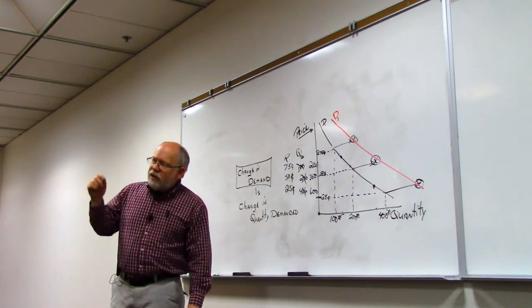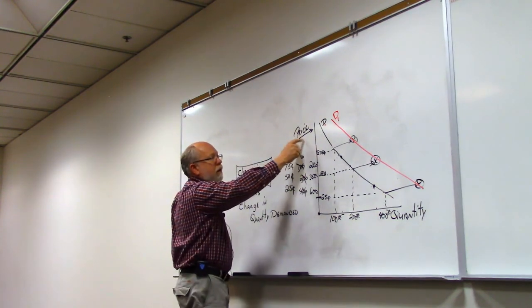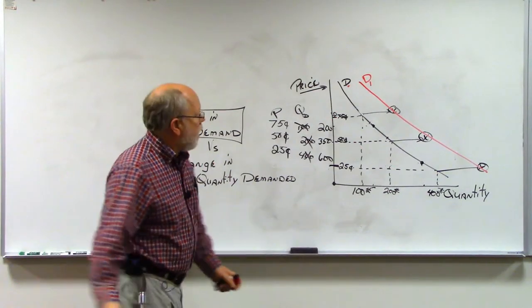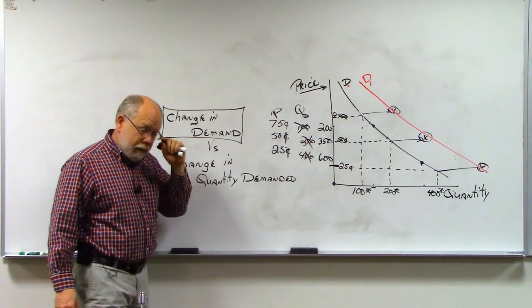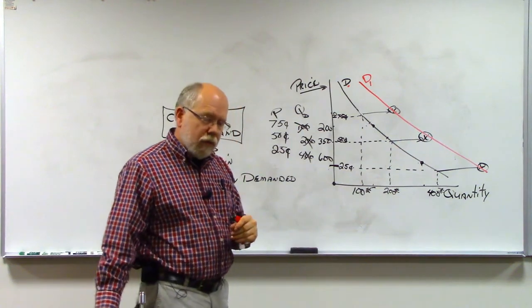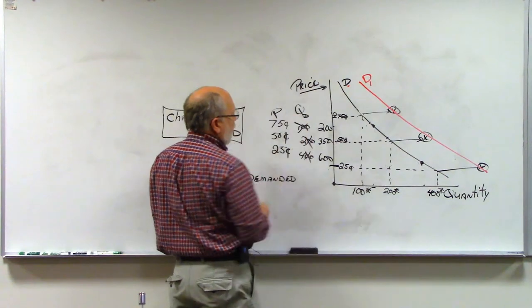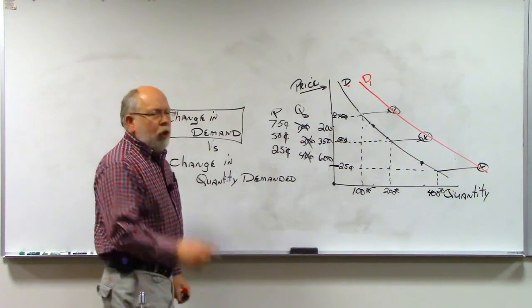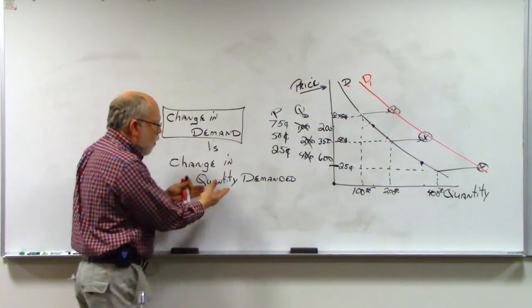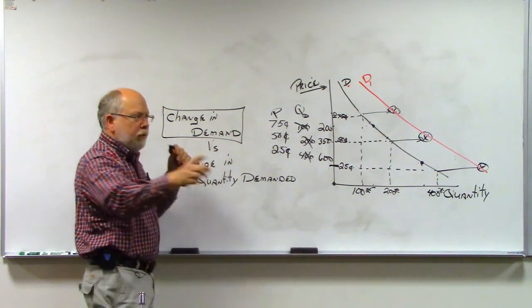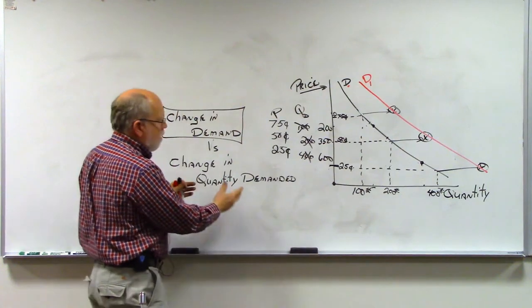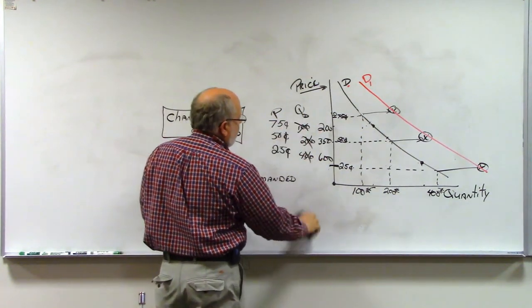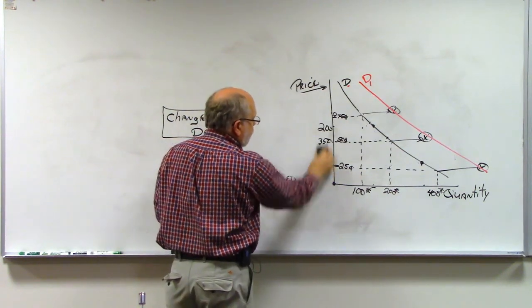We're going to get a change in demand, which is different than a change in quantity demanded. There's only one thing that can change quantity demanded. That's this guy right here. A change in price will change quantity demanded. A change in desire or ability, or you could say really a change in anything else, is going to affect demand and not quantity demanded. If I was to give you a rule, and this rule has some exceptions as we go through the course, but I'd call it the P rule or the price rule. And the price rule is, if you're reading a test question, and it has anything in the test question about a change in price, you know right off the bat that the answer has to say the word quantity demanded in there.